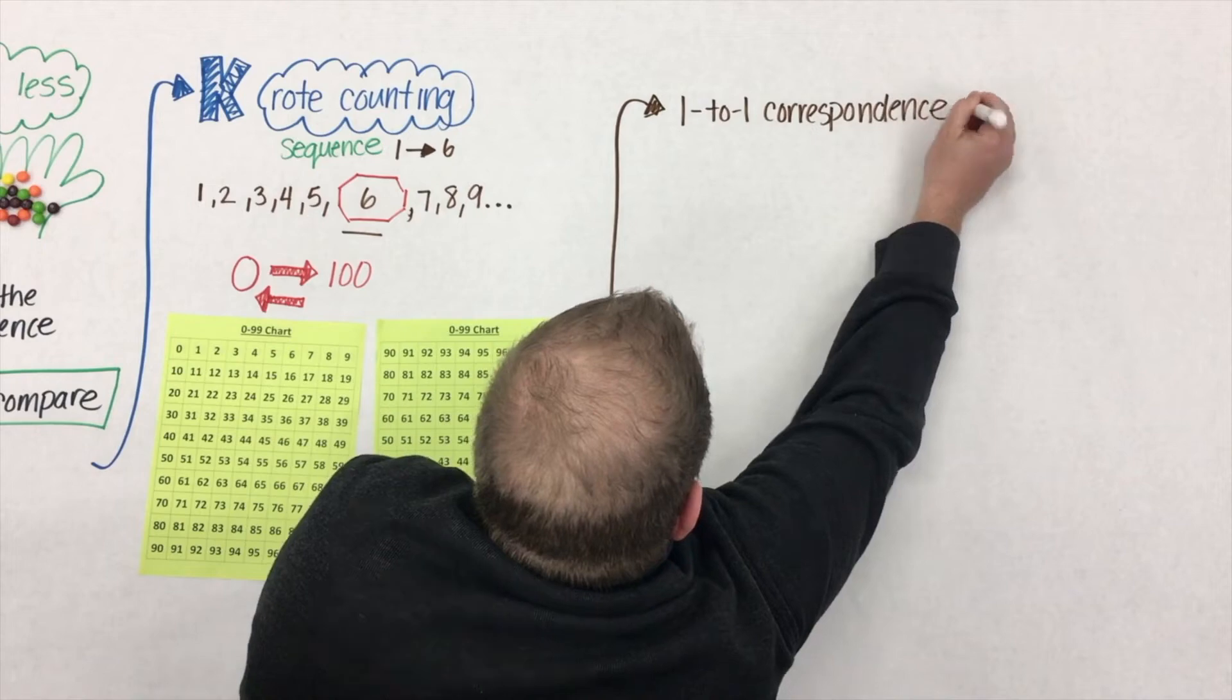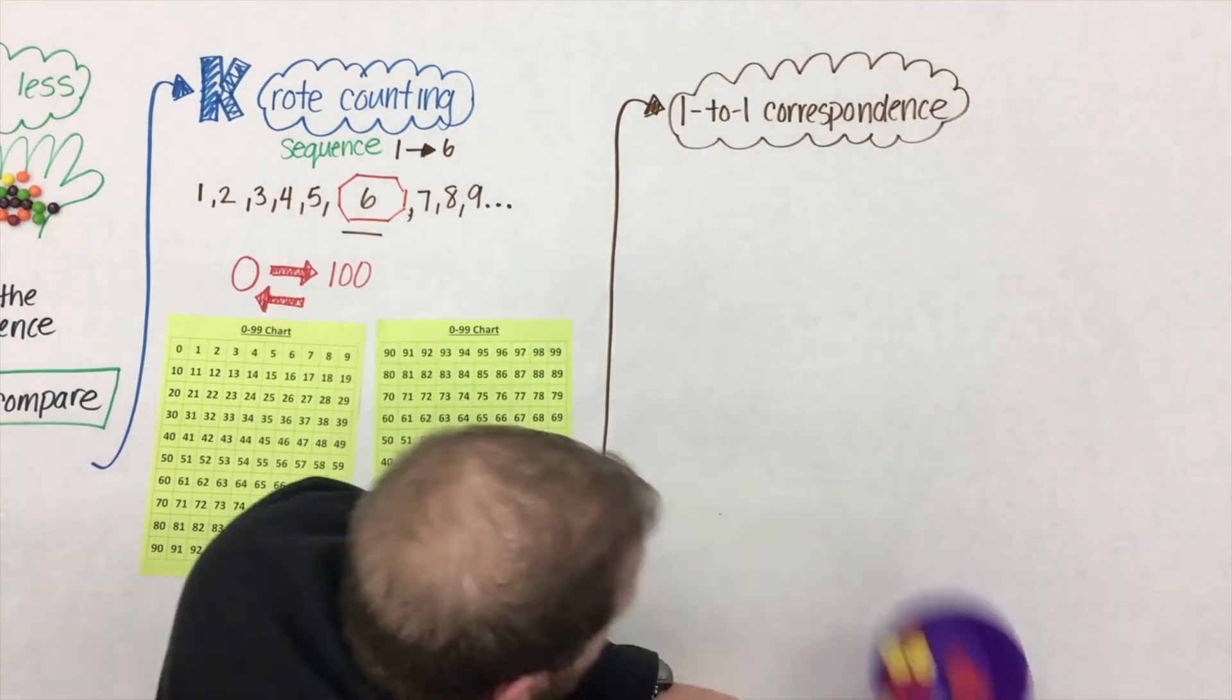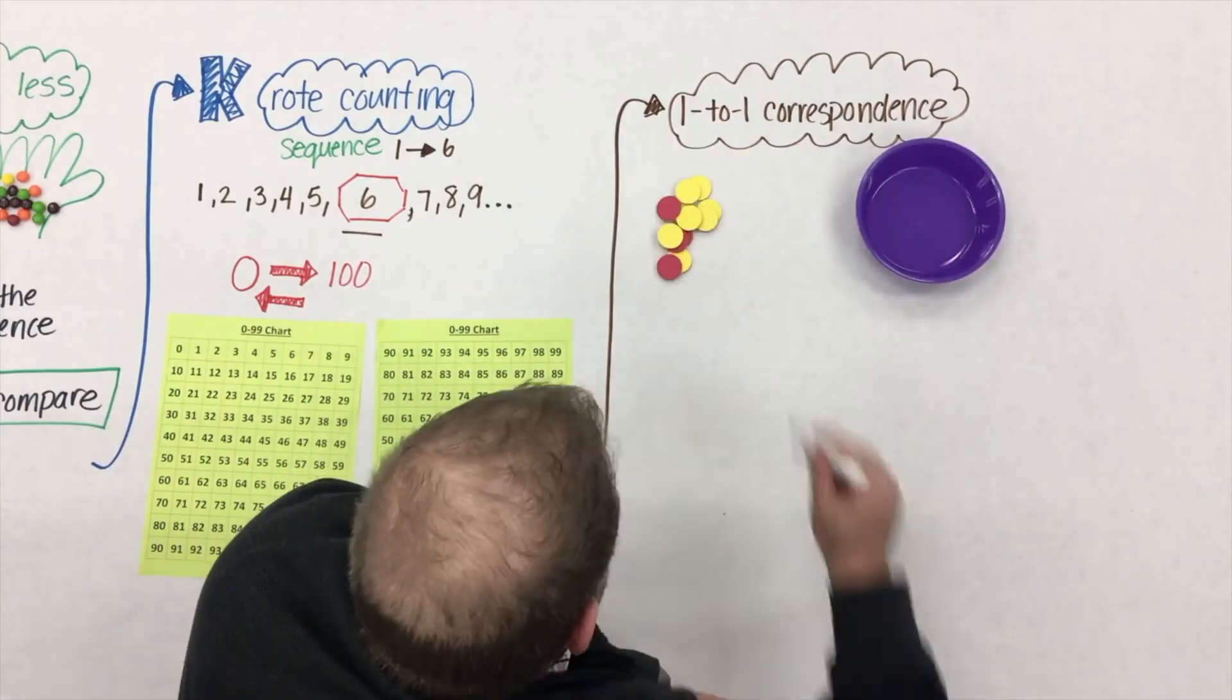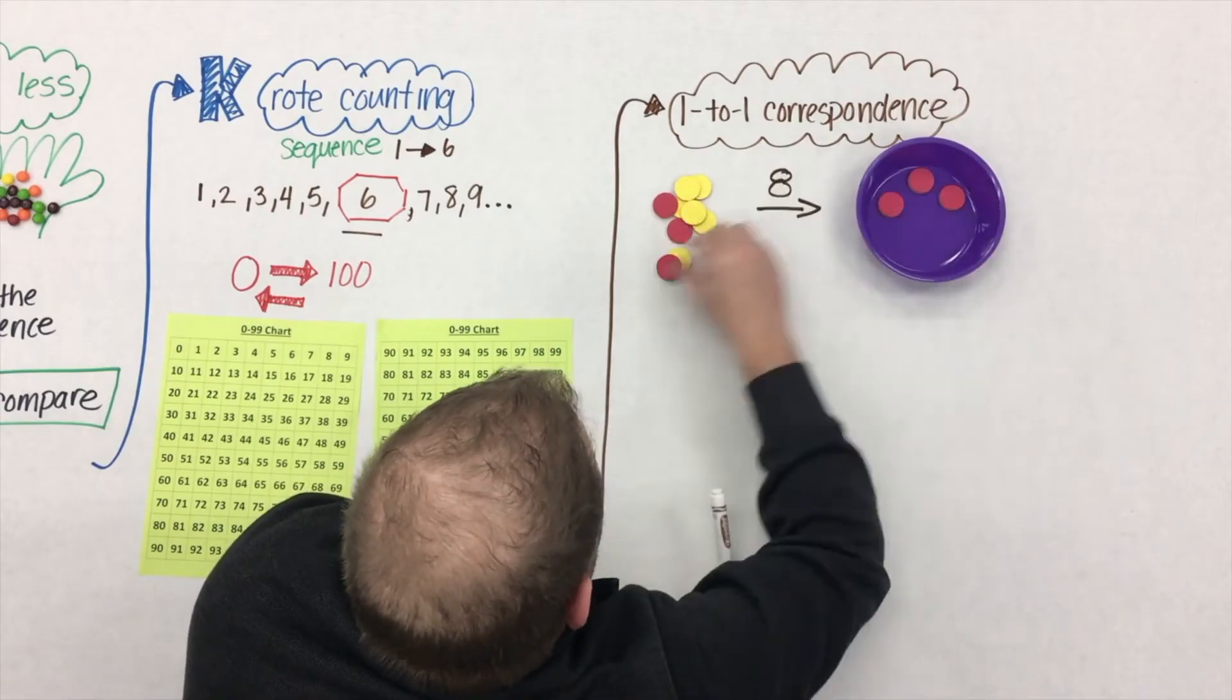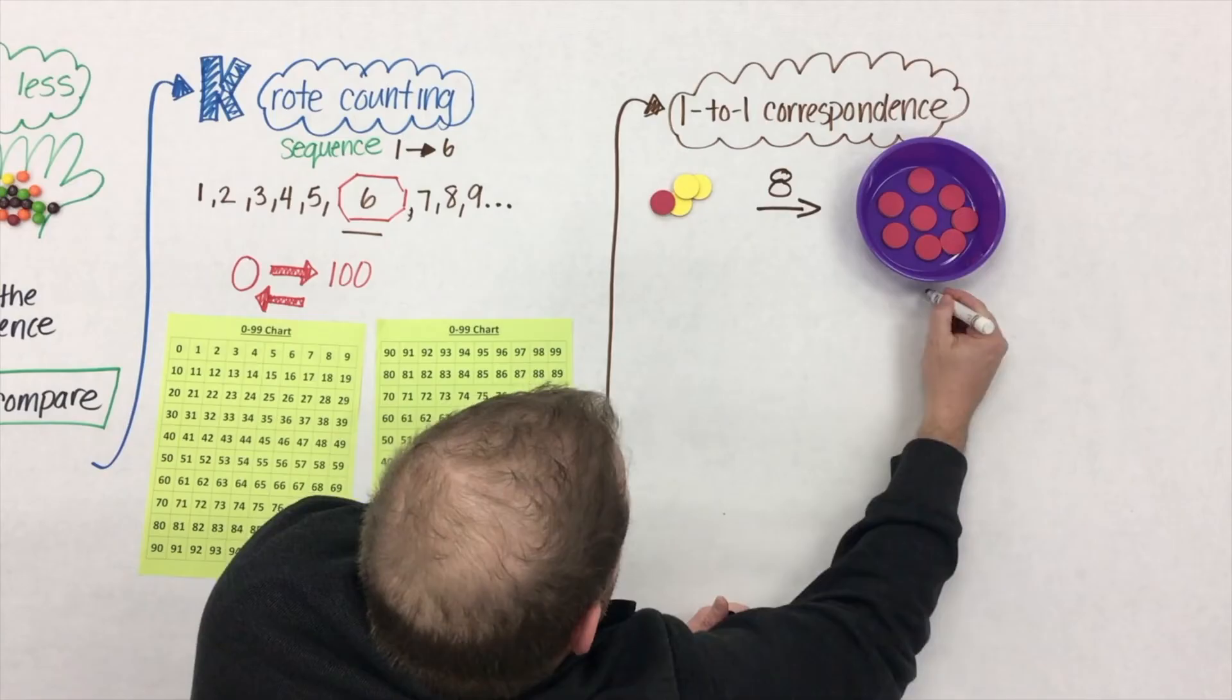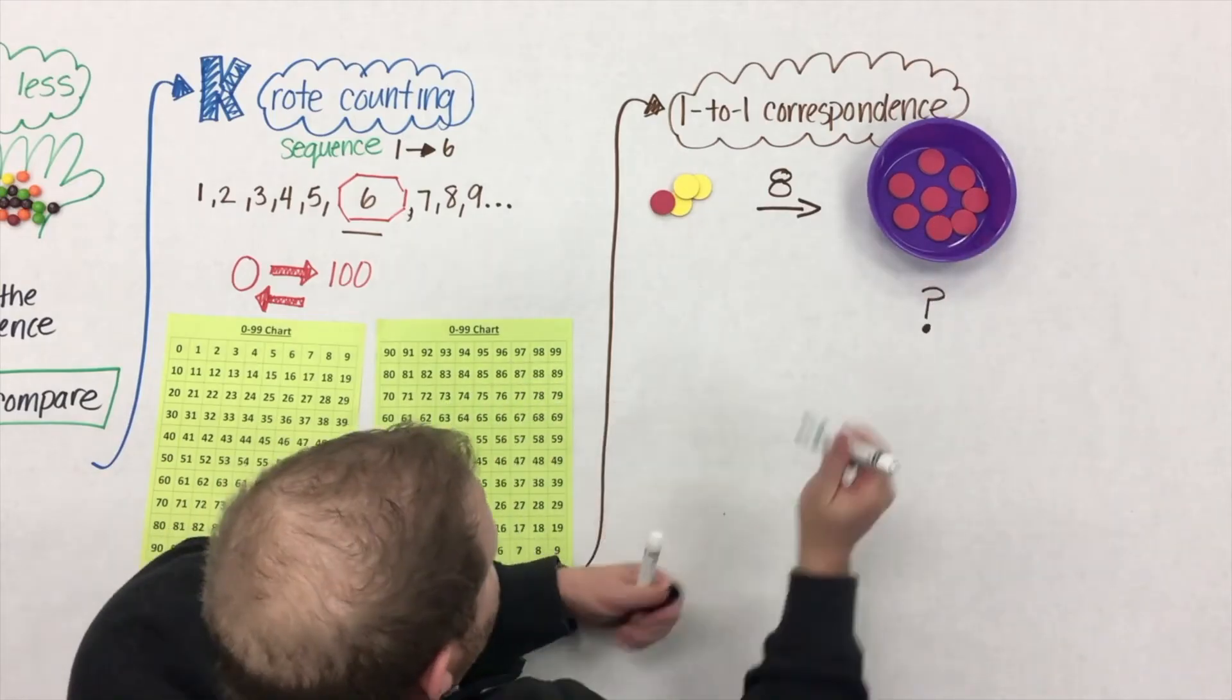So as students are working on this idea of rote counting, we begin to introduce this idea of one-to-one correspondence. And to be honest, one-to-one correspondence, it's much more than simply tagging numbers to objects. Here's an example. If we ask a student to count eight and place them in the bowl from a set and they're able to do that,